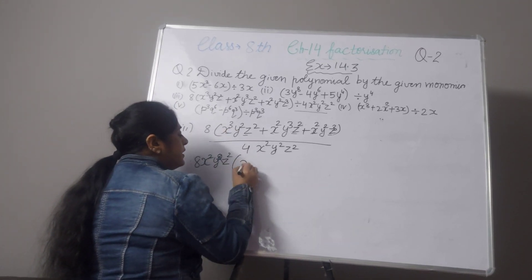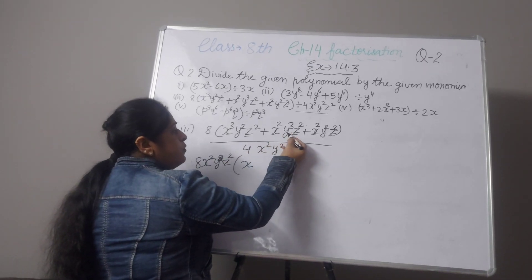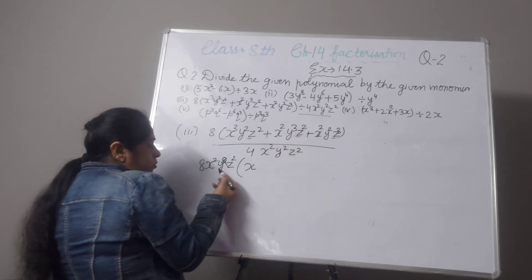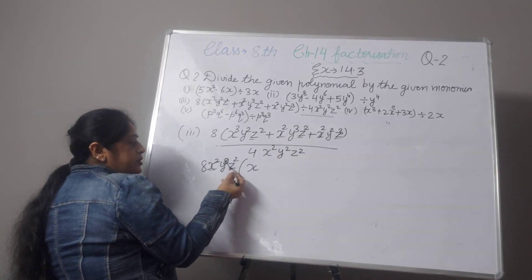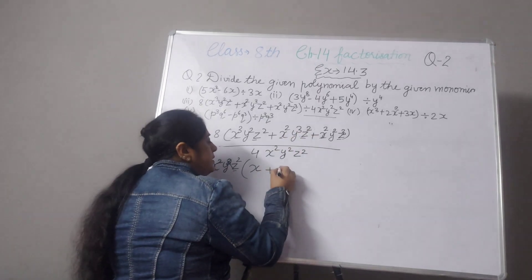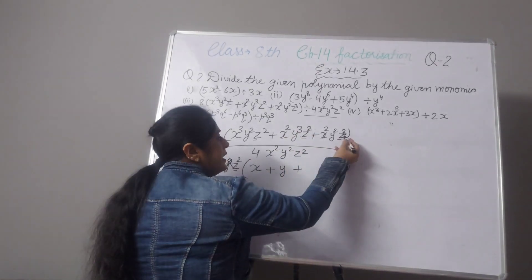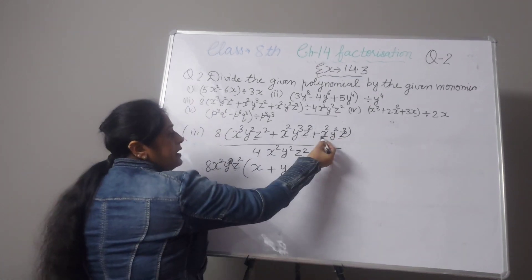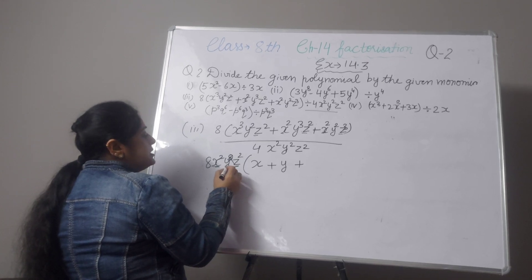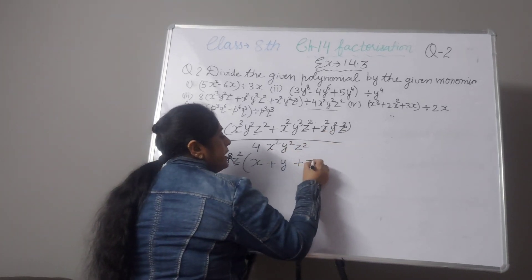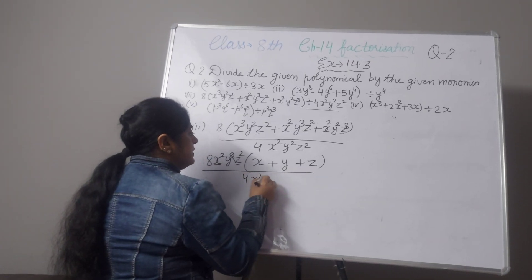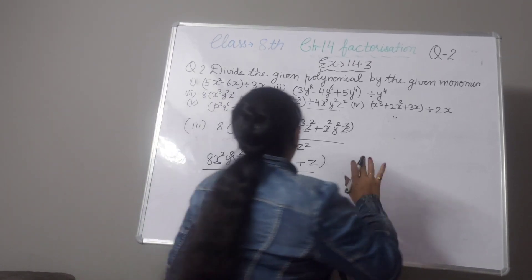Inside after factoring out x²y²z²: the first term leaves x (since x³ ÷ x² = x); the second term has x², y³, z² — dividing y³ by y² leaves y; the third term has x², y², z³ — dividing z³ by z² leaves z. So inside the bracket we have x plus y plus z. The common factor outside is x²y²z².